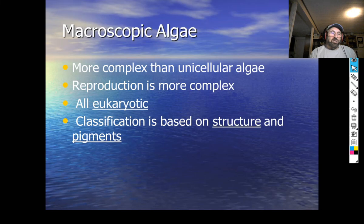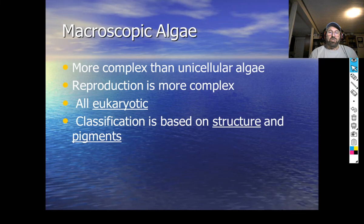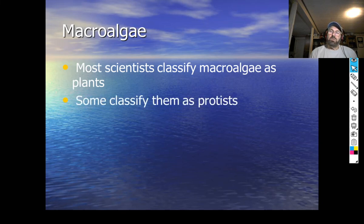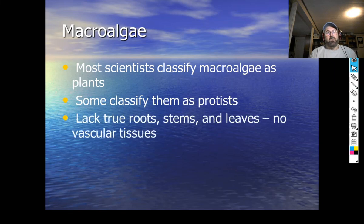The classification of algae is based on structure and mainly pigments. We're going to loosely group algae into three major divisions: the browns, the greens, and the reds — we'll get into those in a few minutes. Most scientists classify the macroalgae as plants.